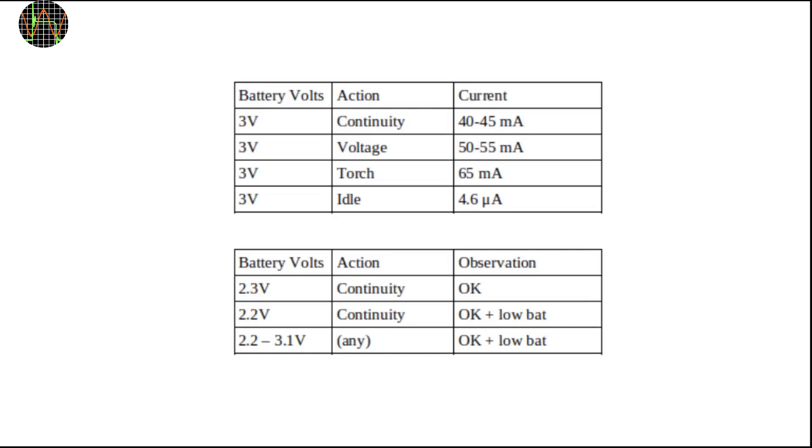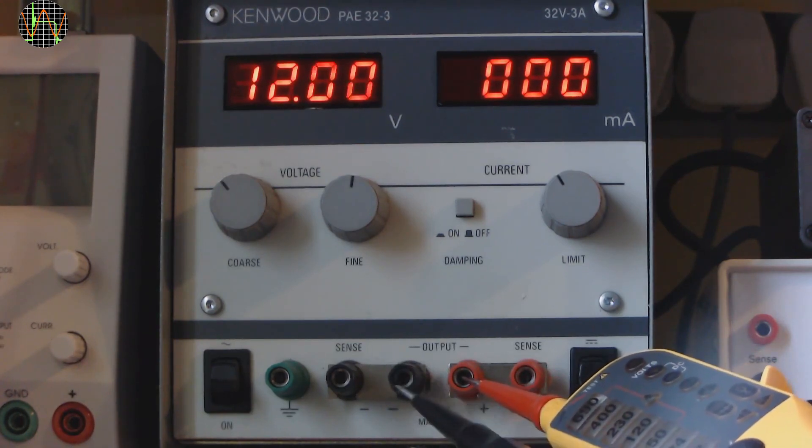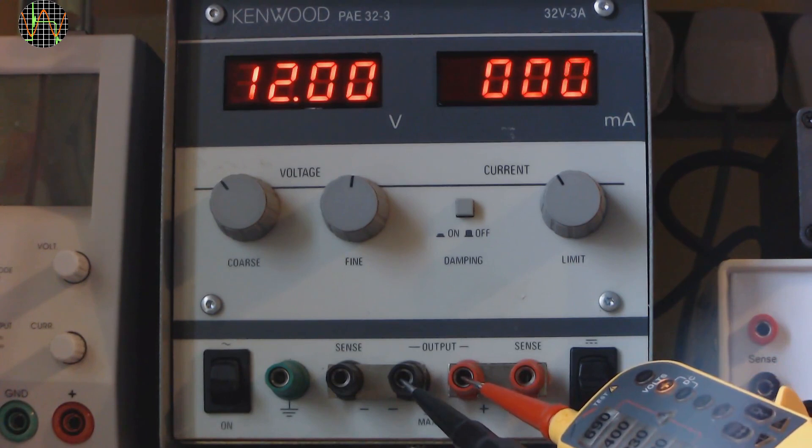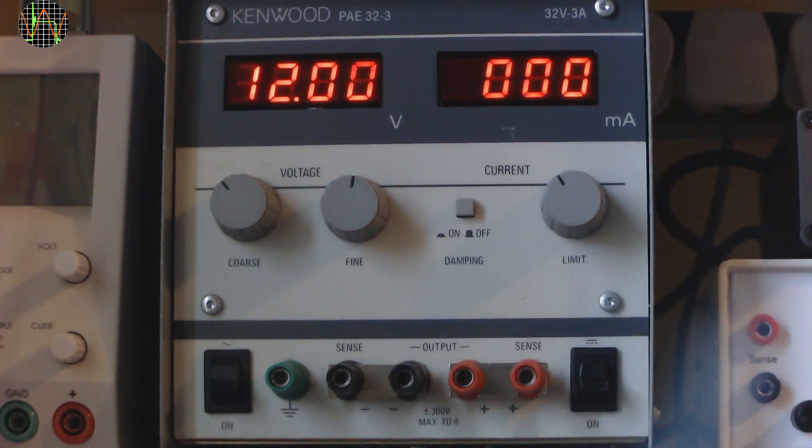Now for a few voltage tests. Here is the unit measuring 12 volts DC from my bench power supply. As expected, the 12 volt LED and the polarity indicator for DC turn on.